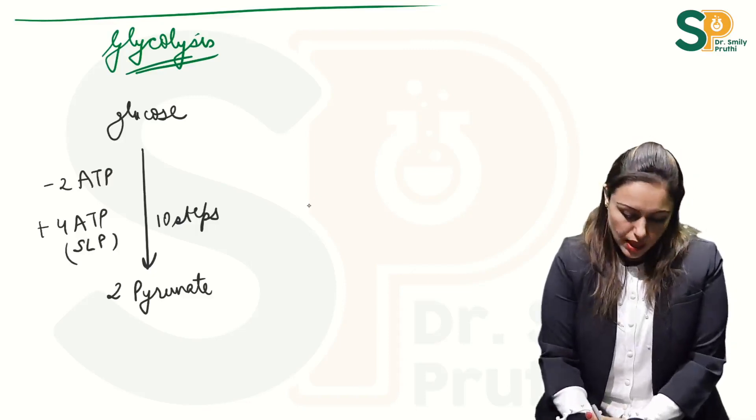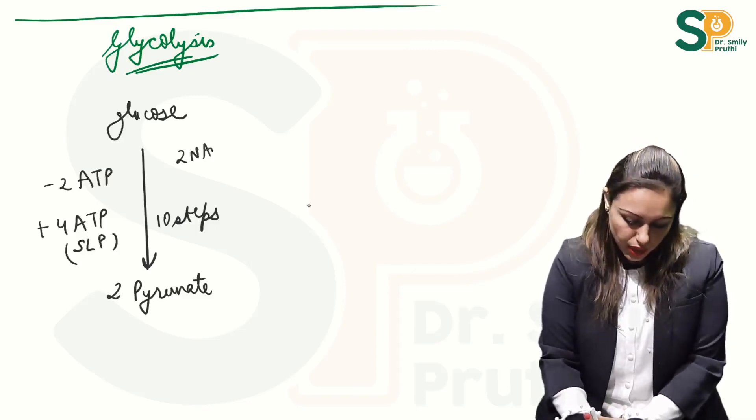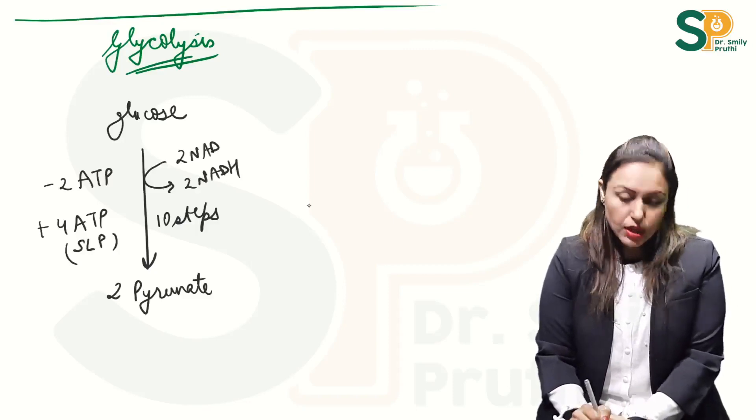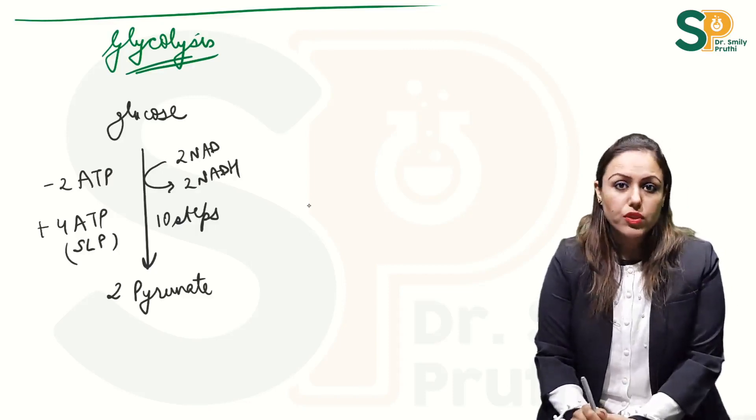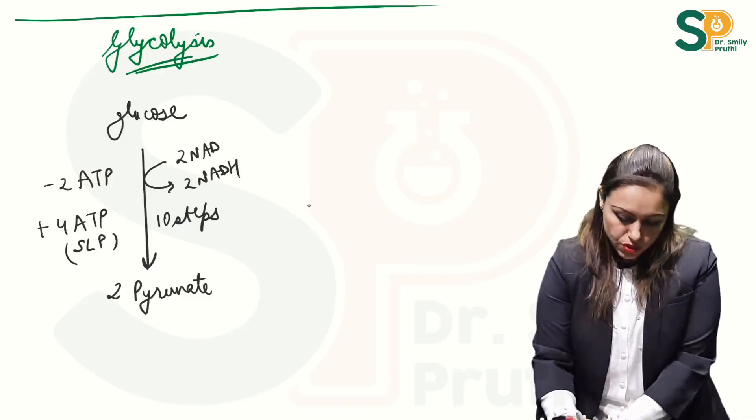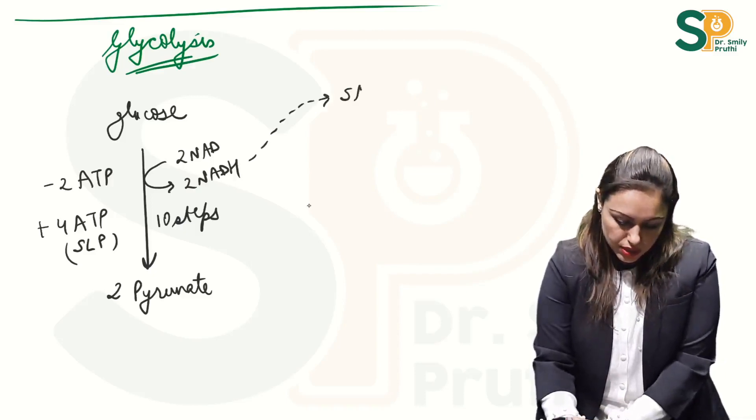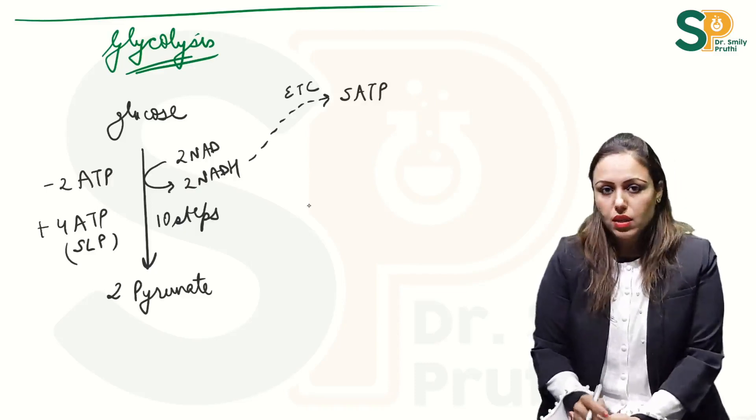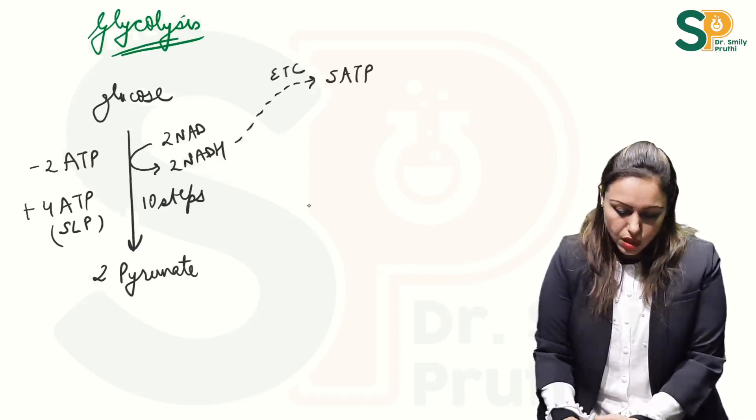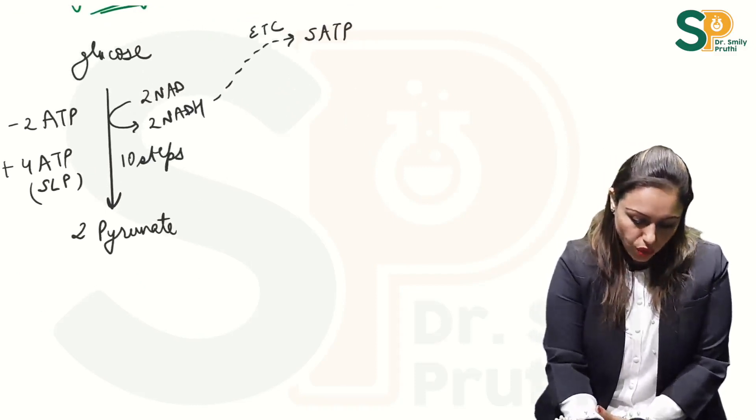And 2 NAD gets converted to 2 NADH in glyceraldehyde-3-phosphate dehydrogenase step. So these 2 NADH will go into ETC to give 5 ATPs. This we have already done. But now in case of anaerobic glycolysis one extra step, 11th number step, is occurring.